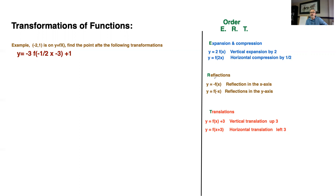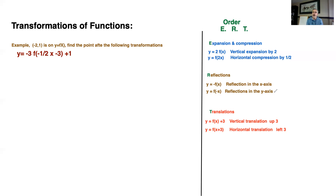The second thing you do after expansion and compression is reflections. If you have a negative in front of the whole function, then it means reflection in the x-axis. So usually if you're reflecting over the x-axis, it's the sign of the y coordinates that's going to change. However, if you have the negative in front of the x instead of in front of the whole function, then this means reflection in the y-axis. And therefore, if you're reflecting over the y-axis, you'll change the sign of x.